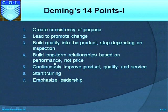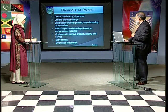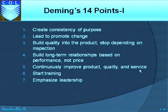Deming's fourth point is to build long-term relationships based on performance, not on price — particularly with your suppliers and vendors. The objective is not simply to buy from whoever supplies the cheapest product. In total quality management, you build long-term commitment with your suppliers rather than switching between supplier A, supplier B, and supplier C from lot to lot.